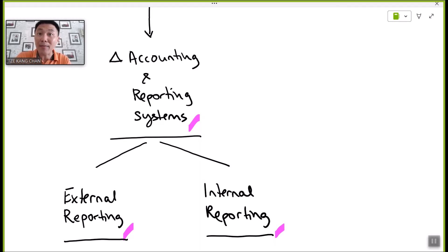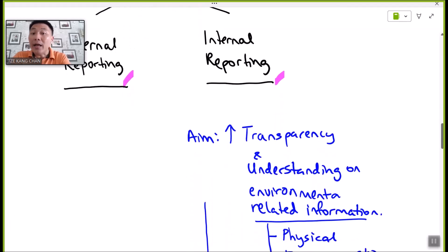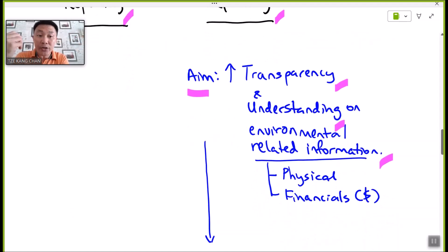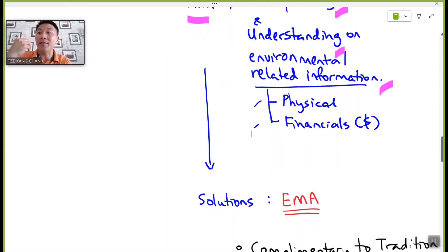In the internal reporting development, the aim is obviously to try to increase the transparency and understanding on environmental related activity and environmental related information that management teams should be well aware of. This information would include not only physical but also financial aspects. How are we to make such improvements on the content and quality of internal reporting? Here is the answer: the Environmental Management Accounting system.